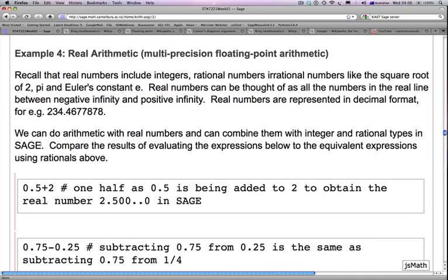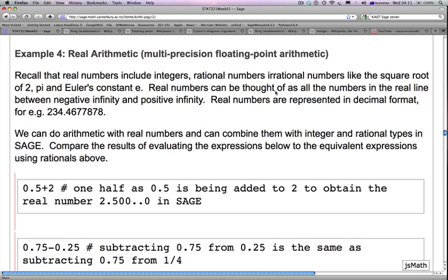The next example is Example 4, and this is on real arithmetic. So recall that real numbers include integers, rational numbers, irrational numbers like the square root of 2, pi, and Euler's constant, e.